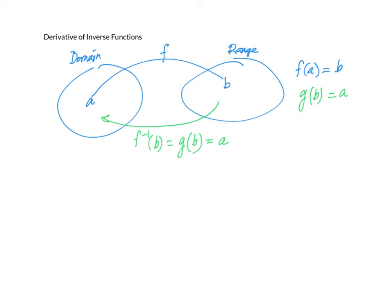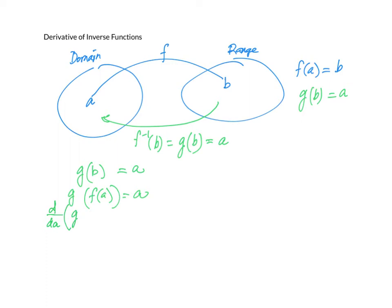Now if we start with g of b, g of b equals a. We know that b is f of a, and by definition of an inverse, g of f of a equals a. If we take the derivative of both sides, we can find the derivative of f inverse. So we take d/da of g, which is f inverse of f of a, equals d/da of a.